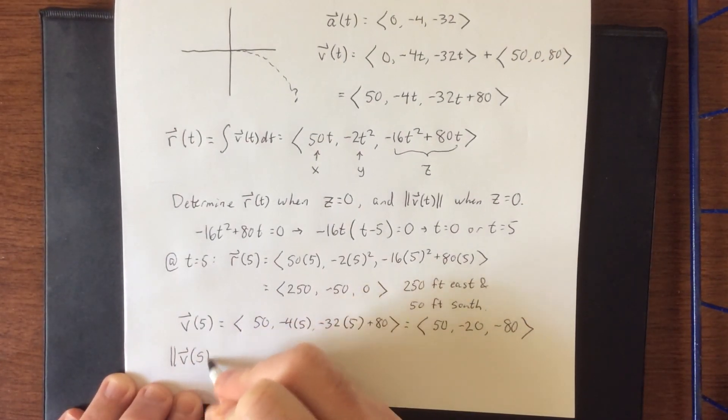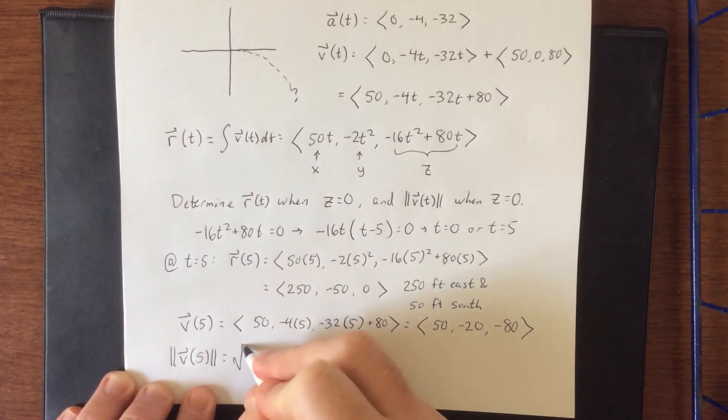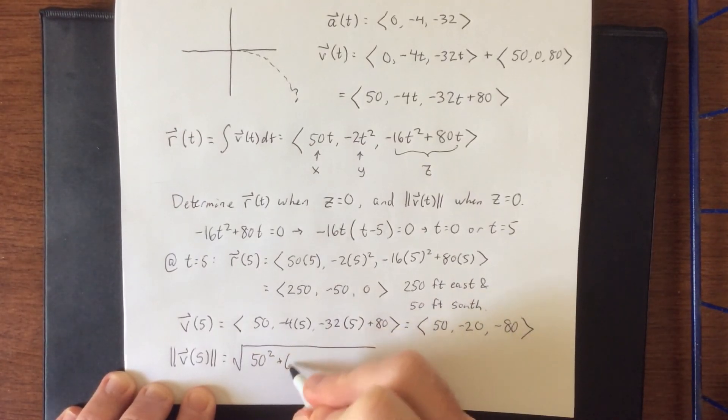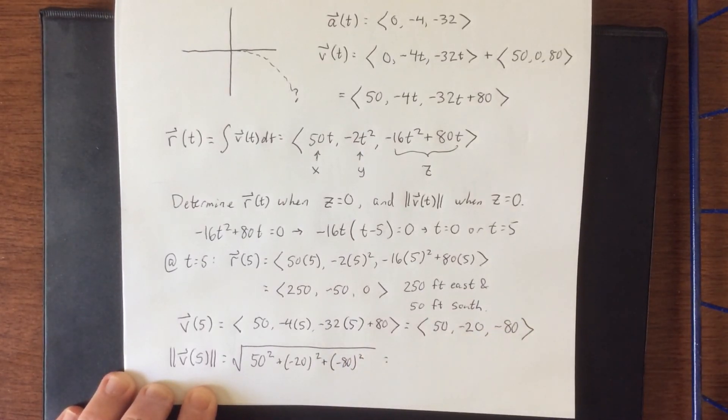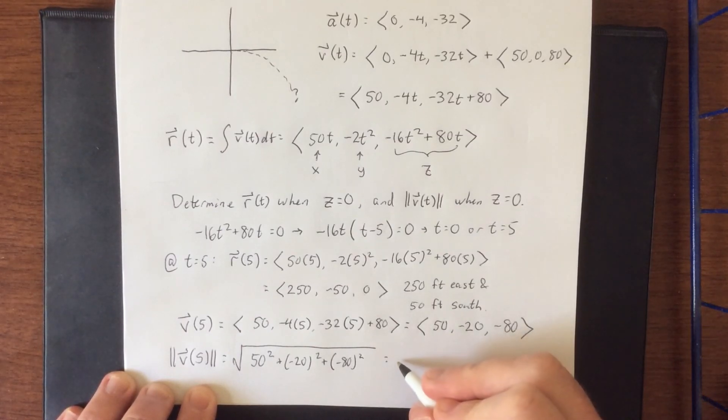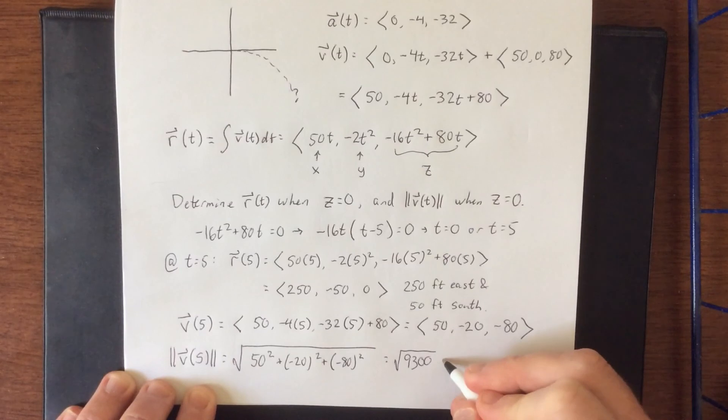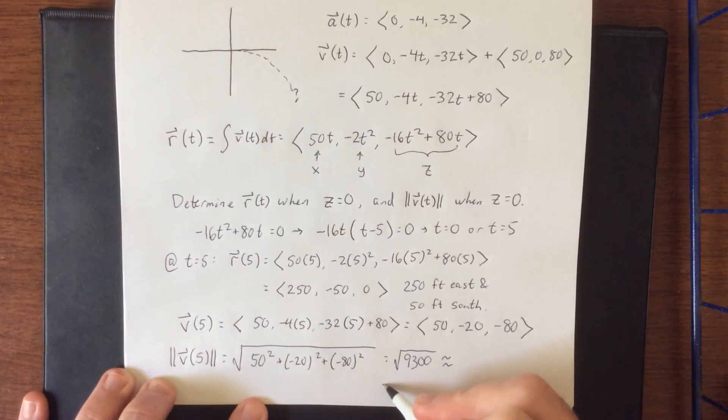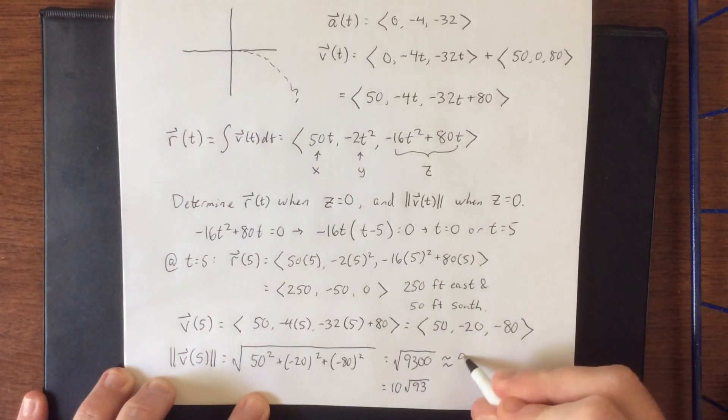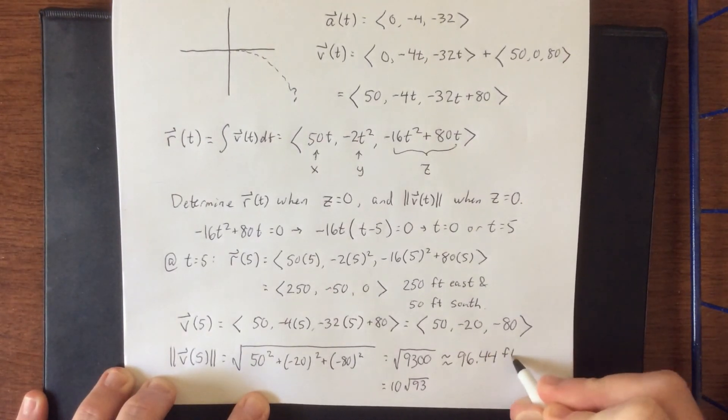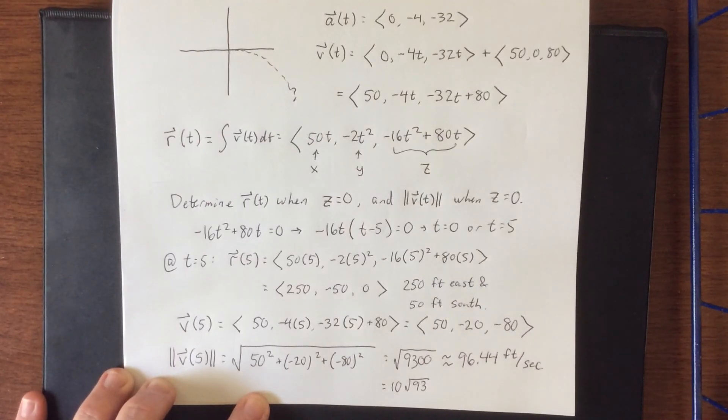Finally taking the magnitude of this we will get our answer. So this will be the square root of 50² + (-20)² + (-80)². Now if we want to be really technical about what we're doing we should simplify this radical as much as possible but that doesn't really give us a genuine real world answer. So we'll go ahead and approximate this. If you wanted to go for an exact answer I would say go ahead and simplify by factoring 9300 into 100 times 93 then taking the square root of the 100. But given that this is a real world problem we should probably go with a real world answer and say that this is about 96.44 feet per second.